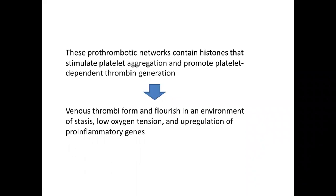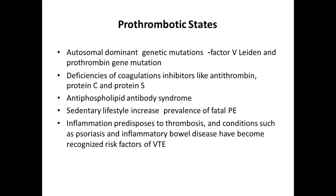Venous thrombi form and flourish in an environment of venous stasis, low oxygen tension, and upregulation of pro-inflammatory genes. In normal people, Virchow's triad is maintained — meaning there is no hypercoagulable state — and this is maintained by various physiological mechanisms of the body.